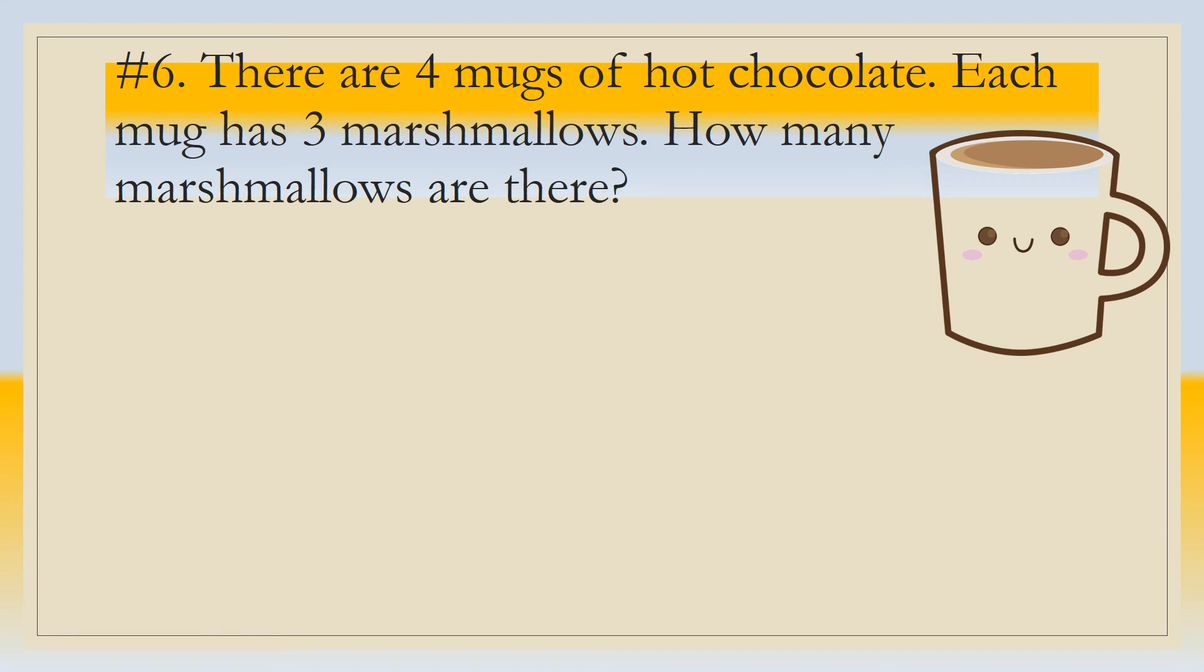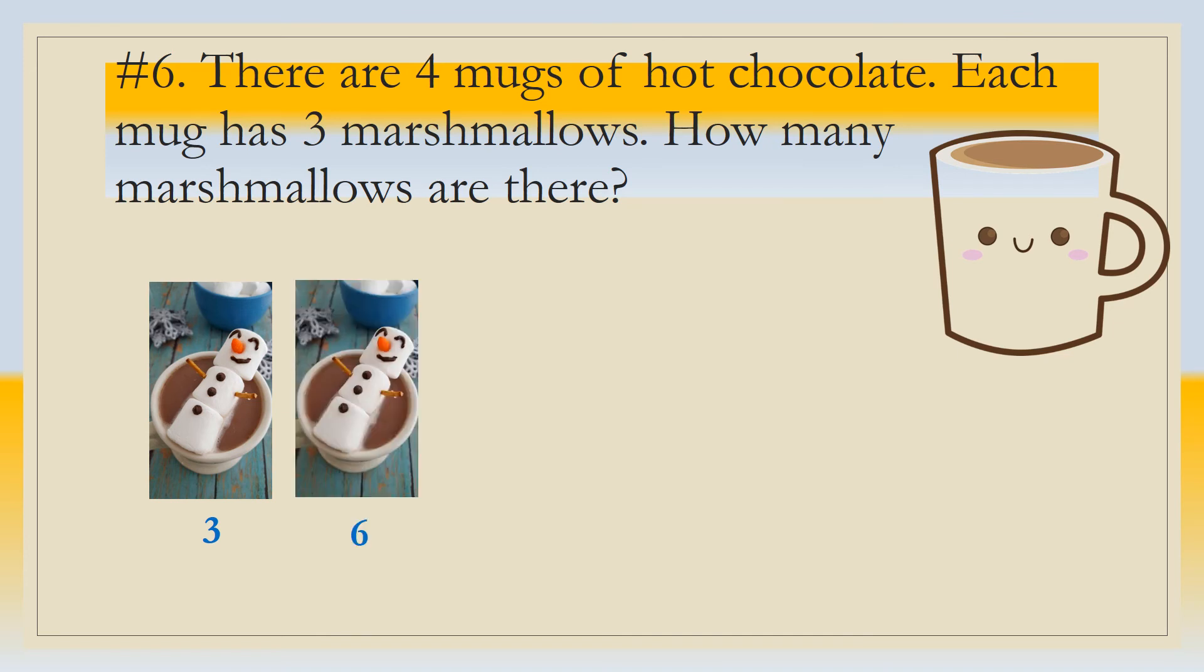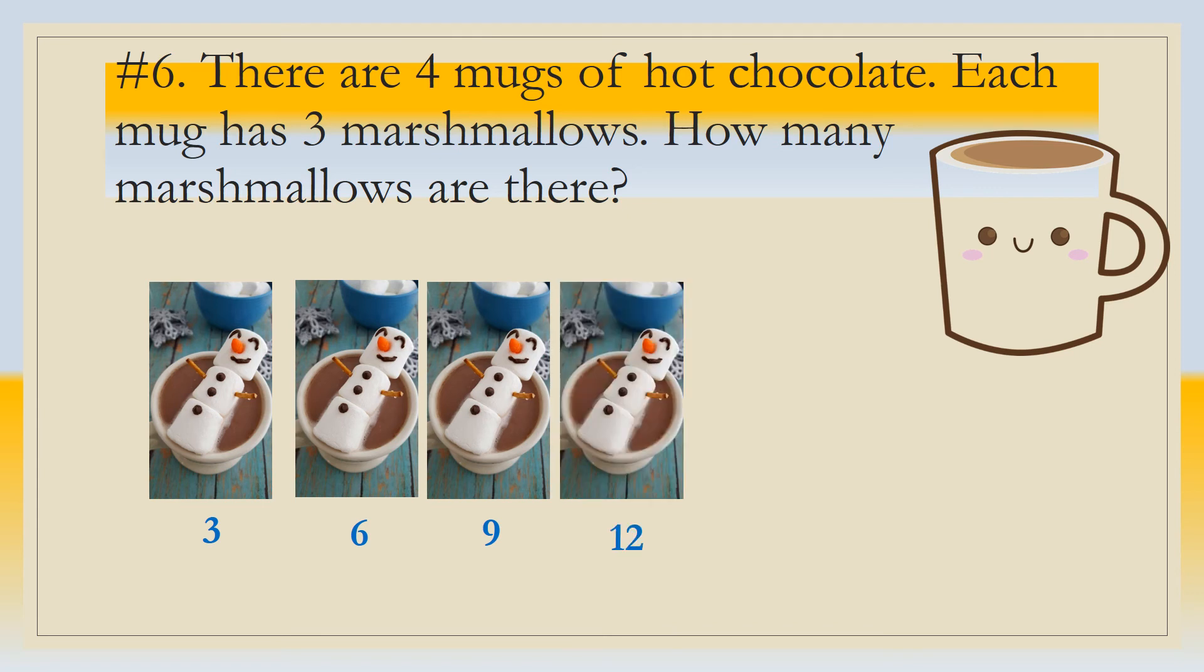Well, let's take a look. One mug has three marshmallows. Two mugs would have six marshmallows. Three would have nine and four would have twelve. So four times three equals twelve. There are twelve marshmallows. Pause this video and do twenty pretend jump ropes and then move on by hitting play.